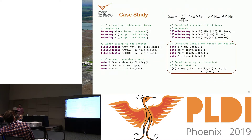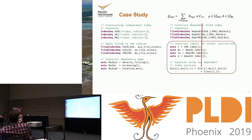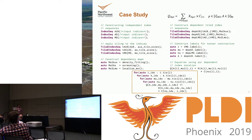The representation looks very similar to the mathematical formulation, making it easier and more programmable for domain science application developers. The loop nest for this computation reorders things so that i comes first, and then using those i indices we gather the corresponding dependencies for the mu, nu, and lambda values and the operation is performed.